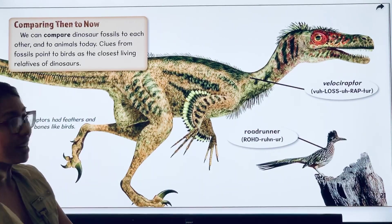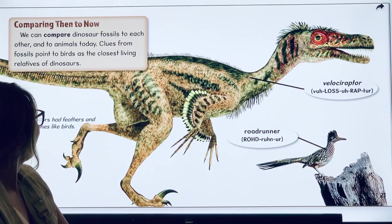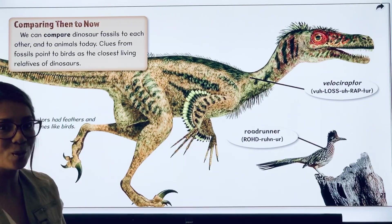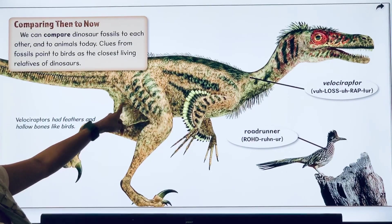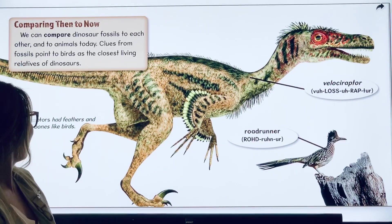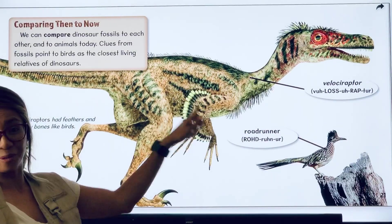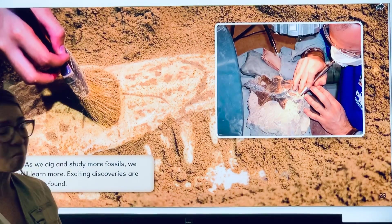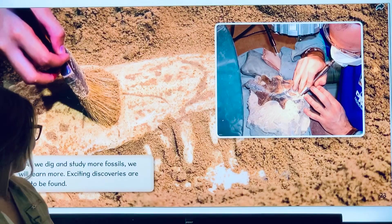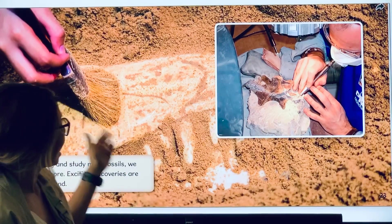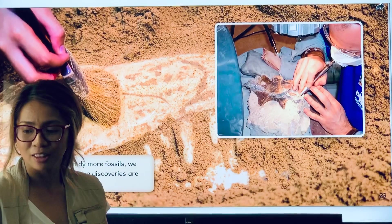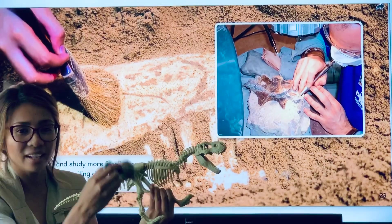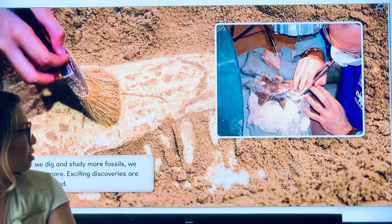Comparing then to now — we can compare dinosaur fossils to each other and to animals today. Clues from fossils point to birds as the closest living relatives of dinosaurs. Velociraptors actually had feathers and hollow bones just like birds. As we dig and study more fossils, we will learn more. Exciting discoveries are still to be found. Today there are still people using special tools to find and dig up fossils very carefully so they don't break the bones.